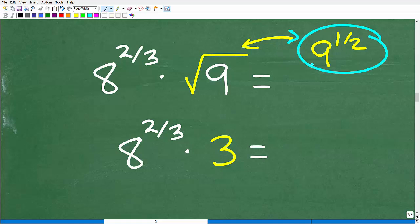Our original problem had 9 to the 1/2. We know that's the square root of 9. And now we understand the principal square root of 9 is 3. So now we just have to figure out what 8 to the 2/3 power is equal to.